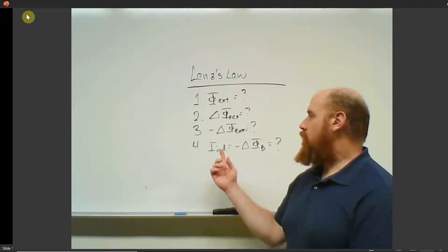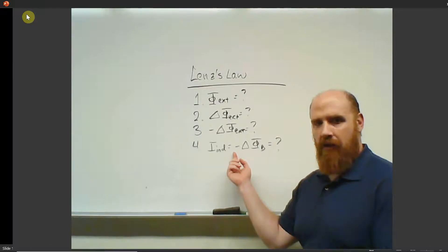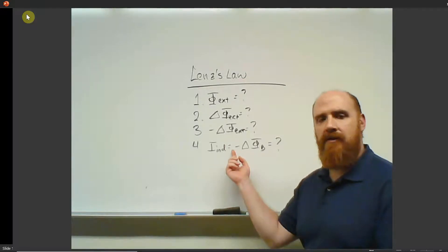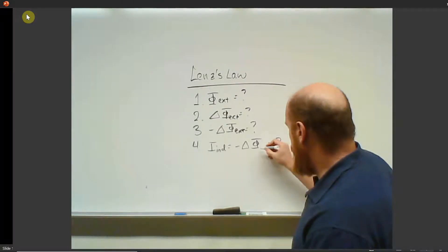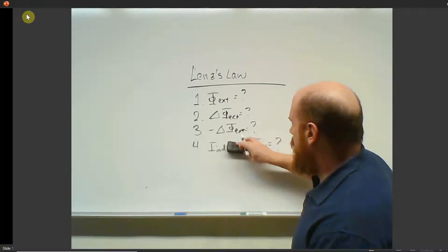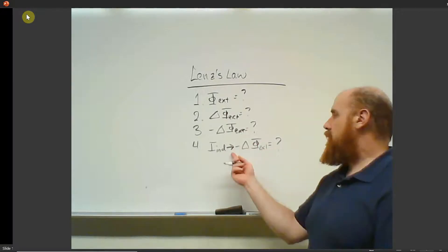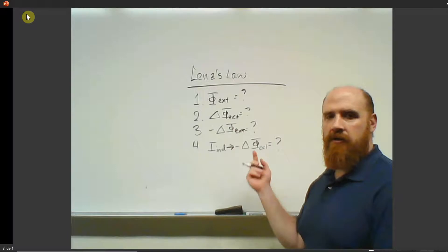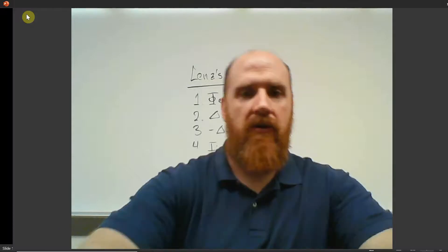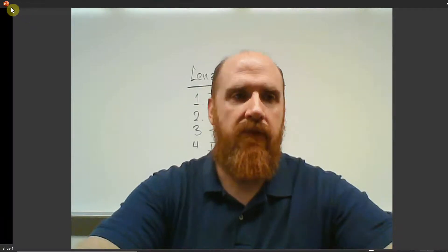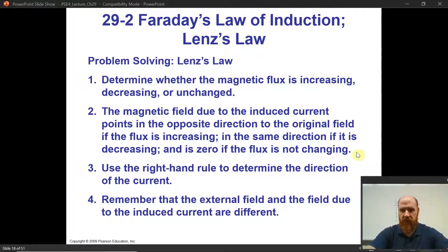Step four: what induced current will generate a flux that opposes the change in external flux? This is the last question. Those four steps are a much easier, simpler version of the book's four steps. But if you want to use the book's steps, go right ahead.